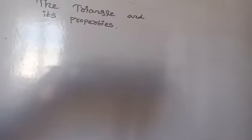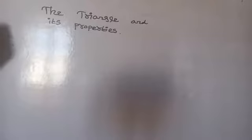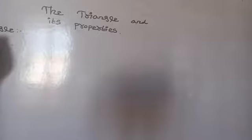What is meant by a triangle? A triangle is a simple closed curve entirely made up of three line segments. In other words, a three-sided polygon is called a triangle.